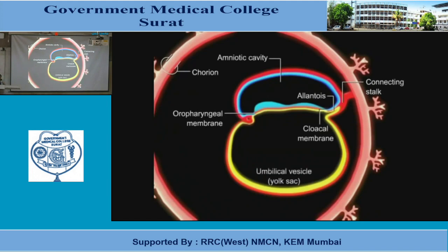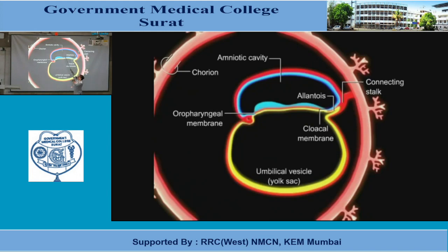In this diagram you can see the different structures which have already formed. The outermost is the trophoblast. These are the chorionic villi. This is the connecting stalk. The dorsal aspect of the embryo is the amniotic cavity. The ventral aspect of the embryo has the umbilical vesicle or yolk sac — a short note may also refer to it as umbilical vesicle.